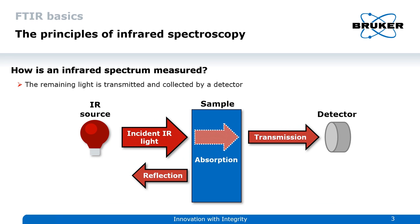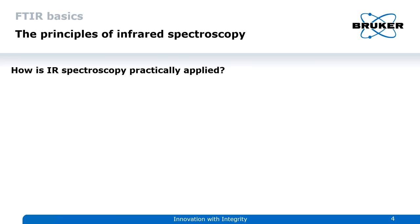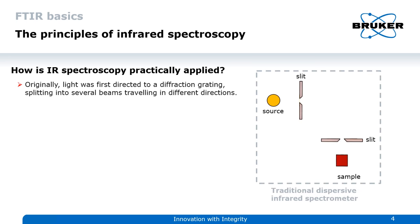But how do we turn this electronic signal into a spectrum? This depends on how the infrared spectrometer is set up. In its early days, infrared spectra were exclusively acquired by traditional dispersive IR spectrometers.